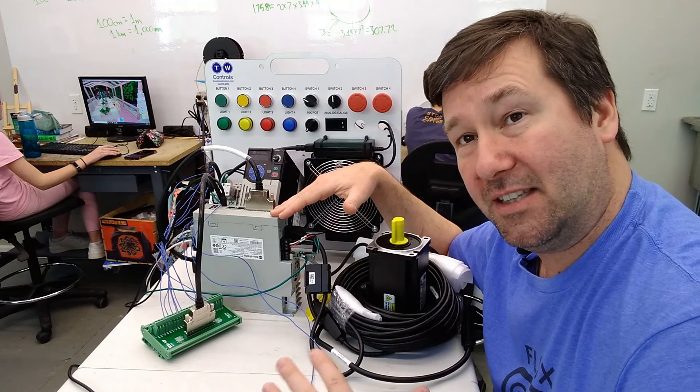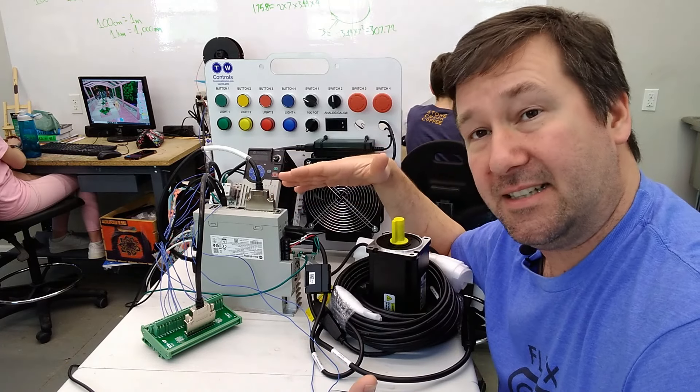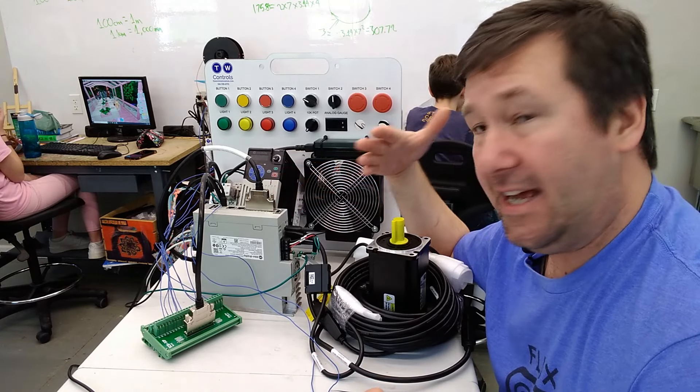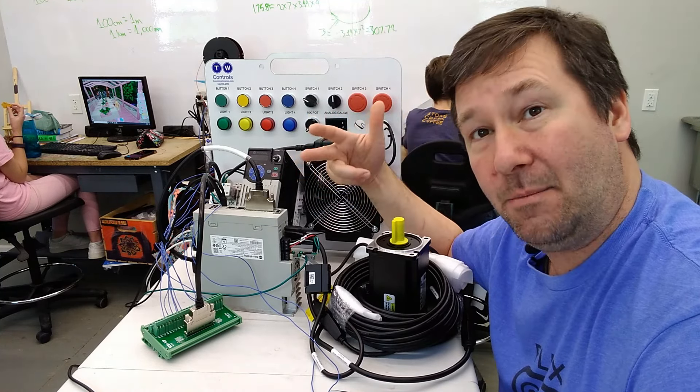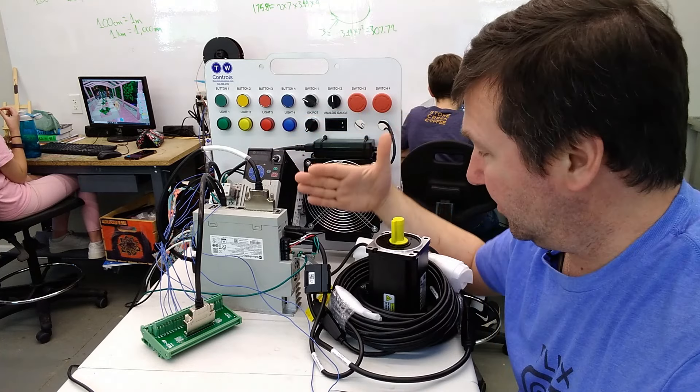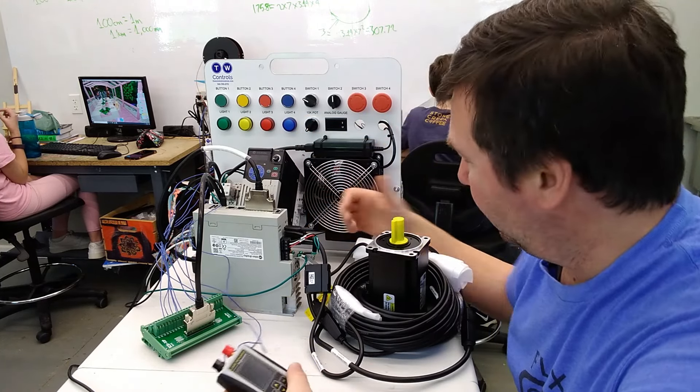That's what we're going to be replacing with this setup here. It's an existing system with a PLC that's sending analog speed command. It sends an enable and a reverse signal, and that's what I have worked to mimic on this one.